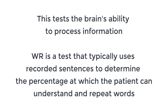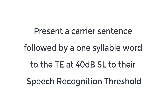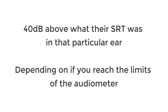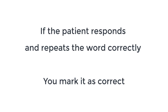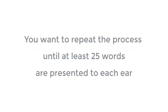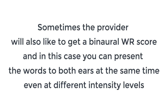The next type of speech test is called the Word Recognition Test. This tests the brain's ability to process information. Word recognition is a test that typically uses recorded sentences to determine the percentage at which the patient can understand and repeat words. You want to present a carrier sentence followed by a one-syllable word to the test ear at 40 dB SL to their Speech Recognition Threshold — 40 decibels above what their SRT was in that particular ear. Repeat the process until at least 25 words are presented to each ear.